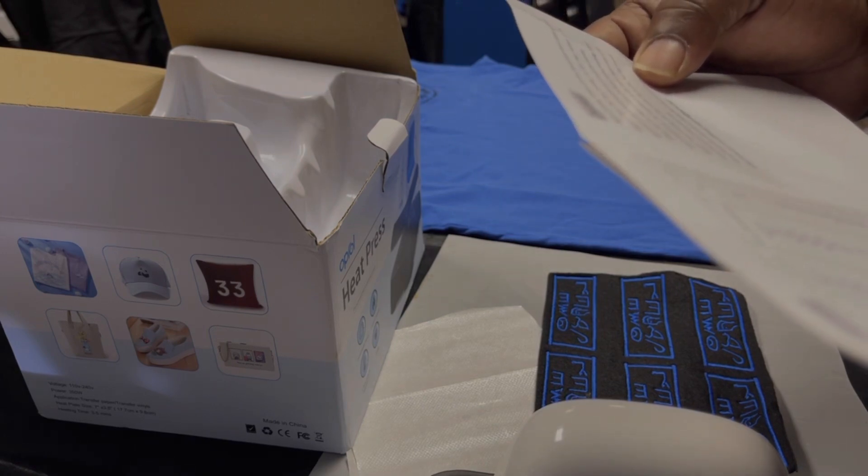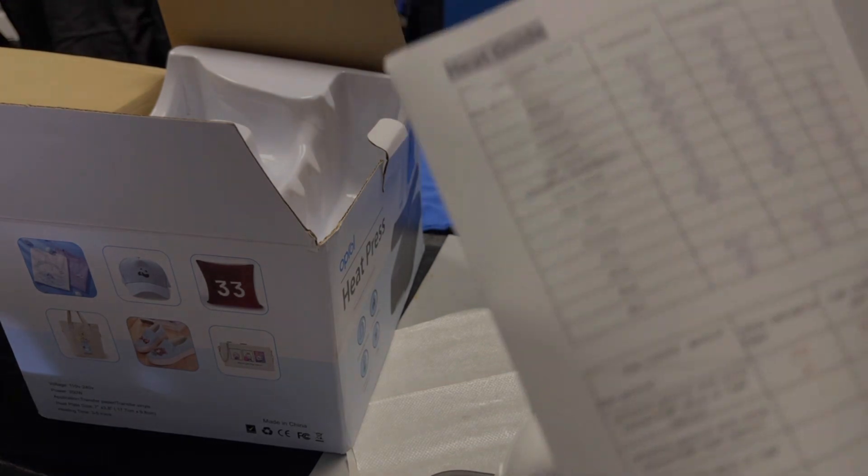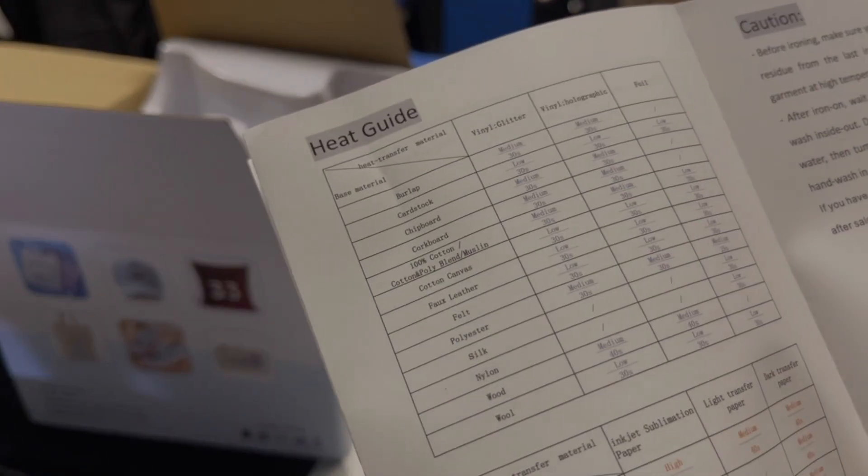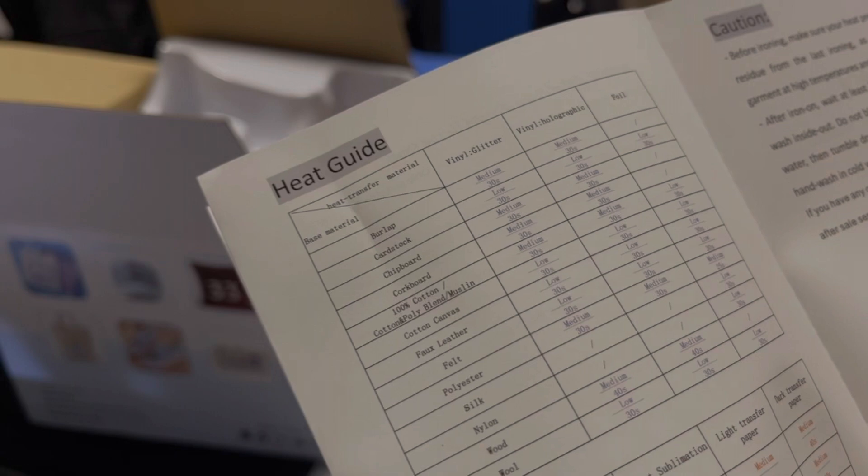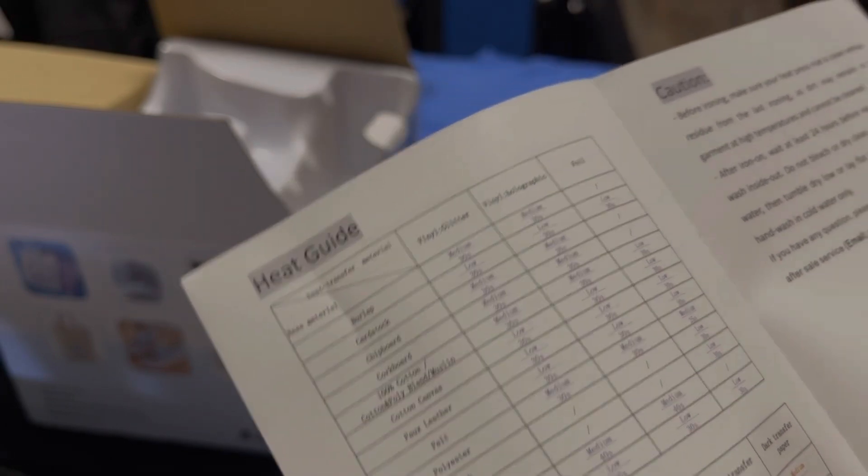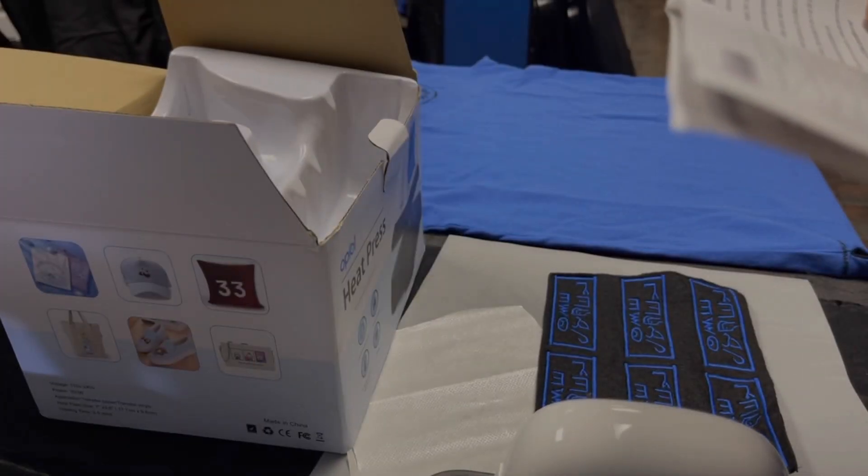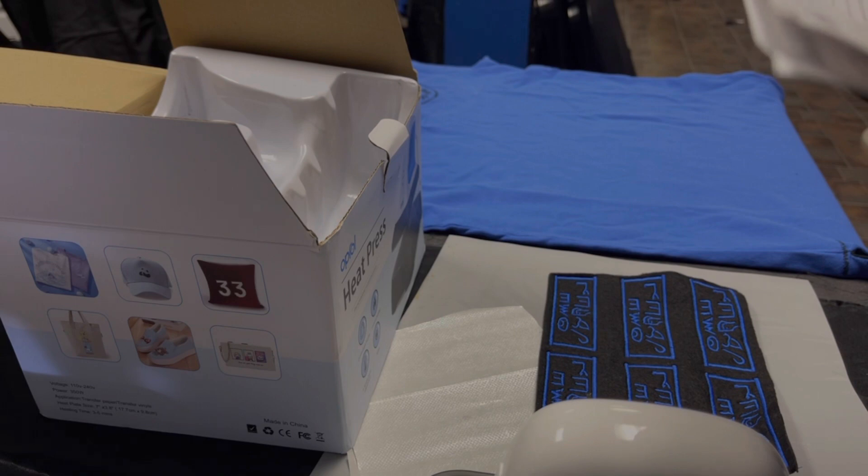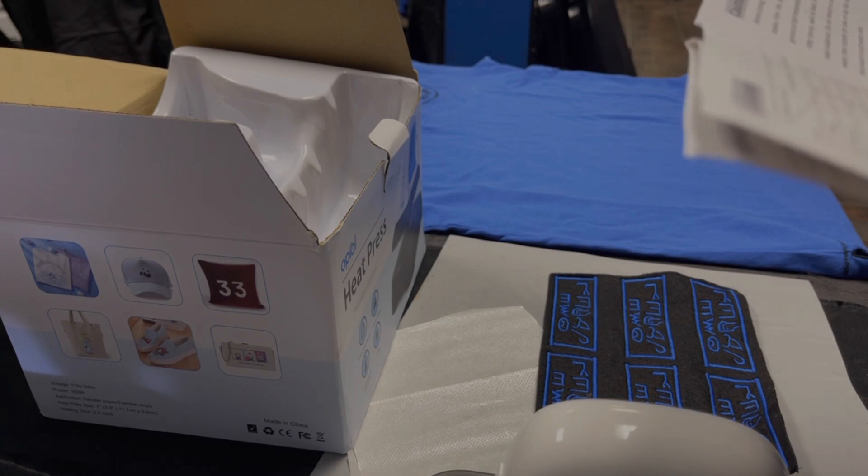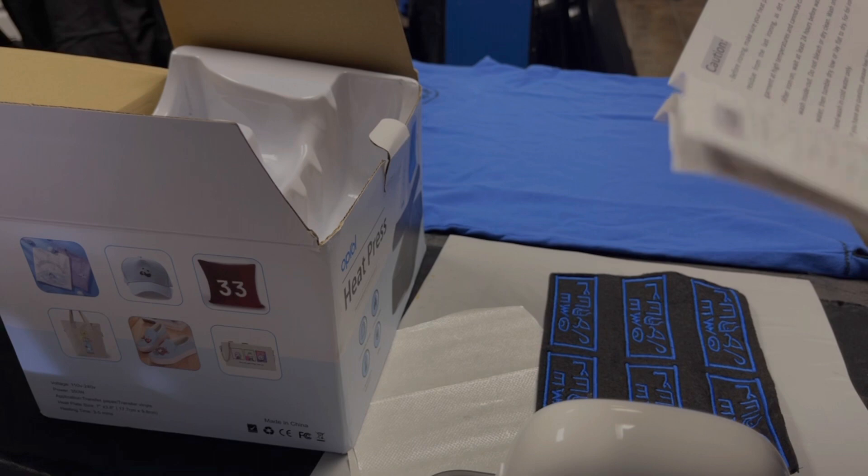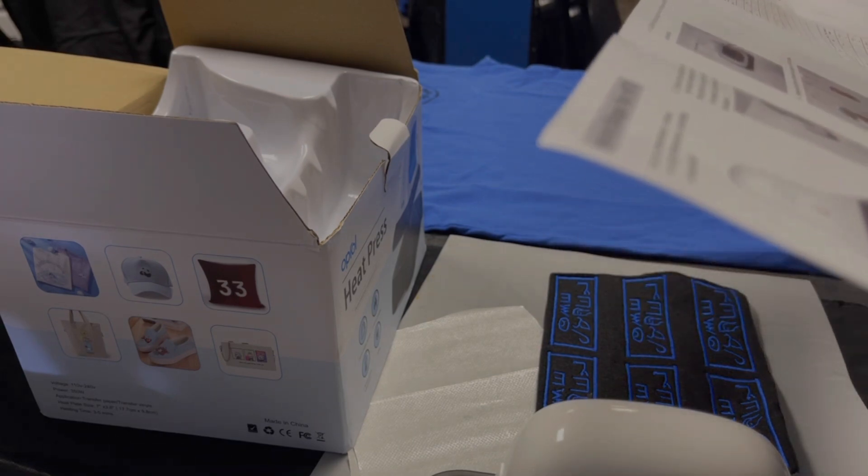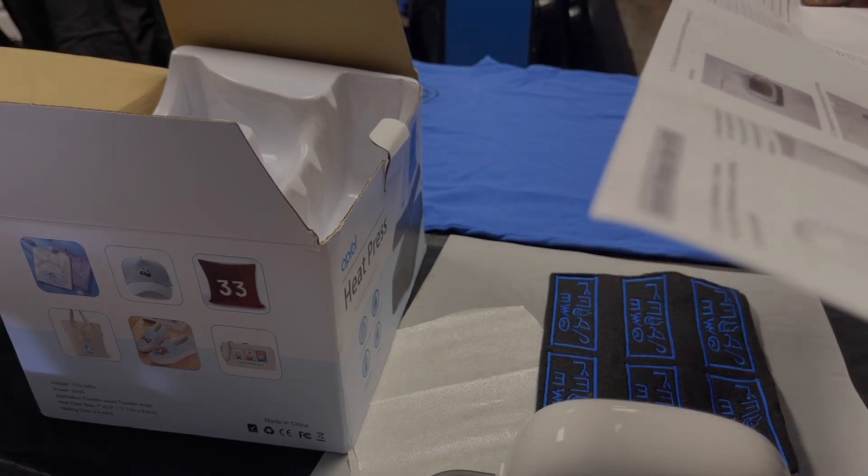You have this instruction manual. Vinyl holographic, got like a little heat chart showing you - glitter vinyl, holographic 40 seconds, light transfer paper 30 seconds, foil takes 30 seconds on low medium for holographic.